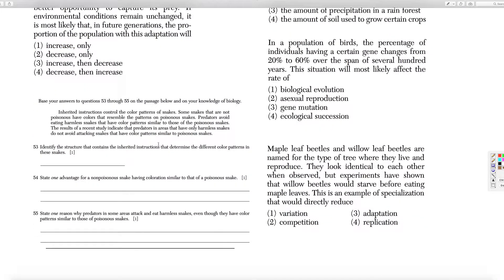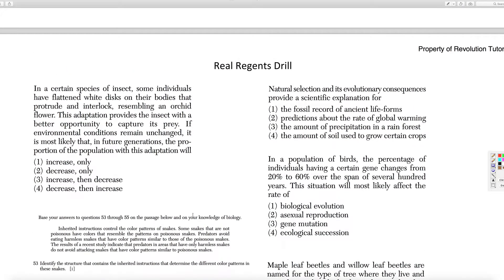Identify the structure that contains the inherited characteristics. So, it's the DNA. One advantage of the non-poisonous having it is it's mistaken for a poisonous one and then they don't eat it. In the area where it doesn't, why do they eat the harmless snakes? Because there's no poisonous snakes there. So, what probably happened is in the areas where there are poisonous ones, whatever ones were attracted to eating the poisonous ones died out historically over time. Whereas here, they didn't die out because there's no problem with eating it.